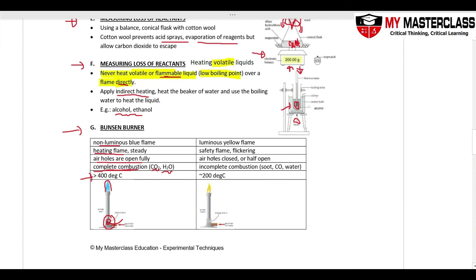When the air hole is closed or half open, oxygen cannot enter as readily, resulting in incomplete combustion. This produces soot (carbon) and carbon monoxide instead of CO2. This flickering flame is called the safety flame — it is not used for heating. With the air hole closed, the flame turns yellow and bright, which is called the luminous flame. Its temperature is only about 200 degrees Celsius.